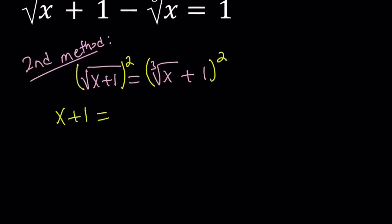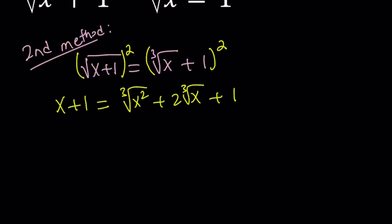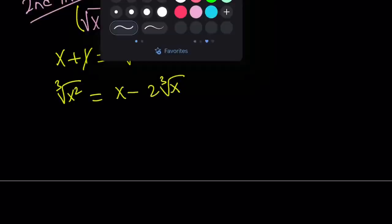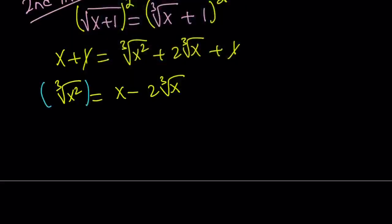We have x plus 1 on the left-hand side. On the right-hand side, we have (a + b) quantity squared, so it's going to look like cube root of x squared plus 2 times cube root of x plus 1. This is not good because we have cube roots on the right-hand side. Even if we isolate cube root of x squared and write it as x minus 2 times the cube root of x, cubing both sides is just going to introduce more radicals. So this is kind of not getting anywhere.